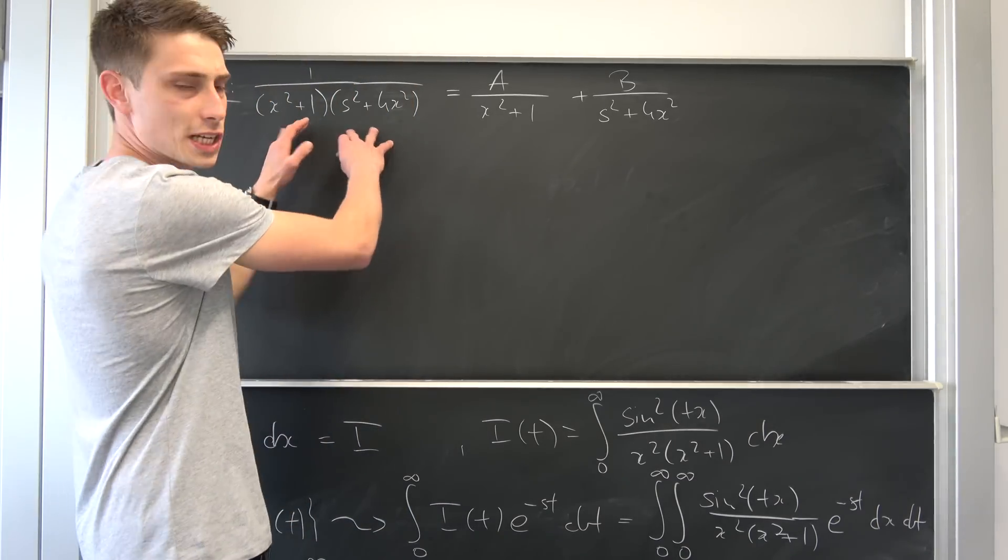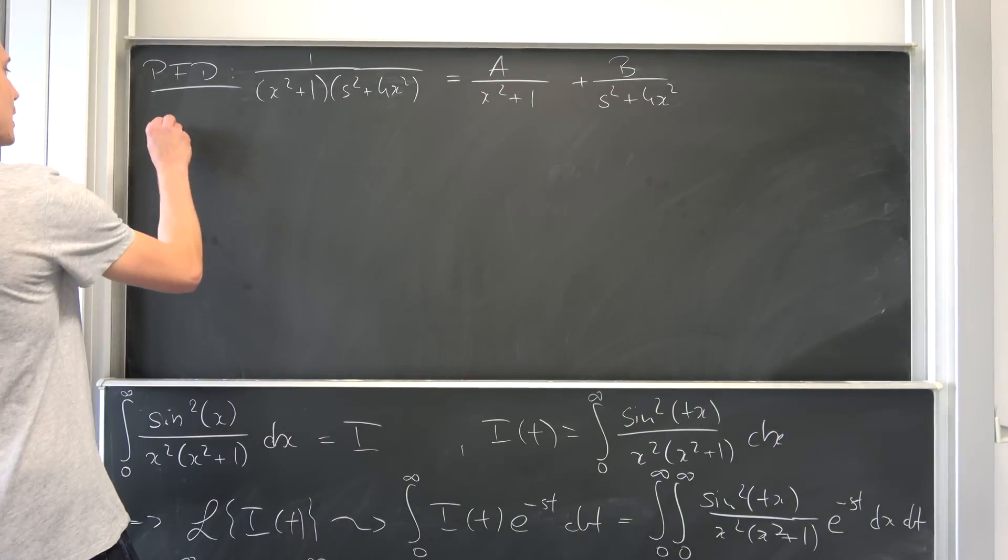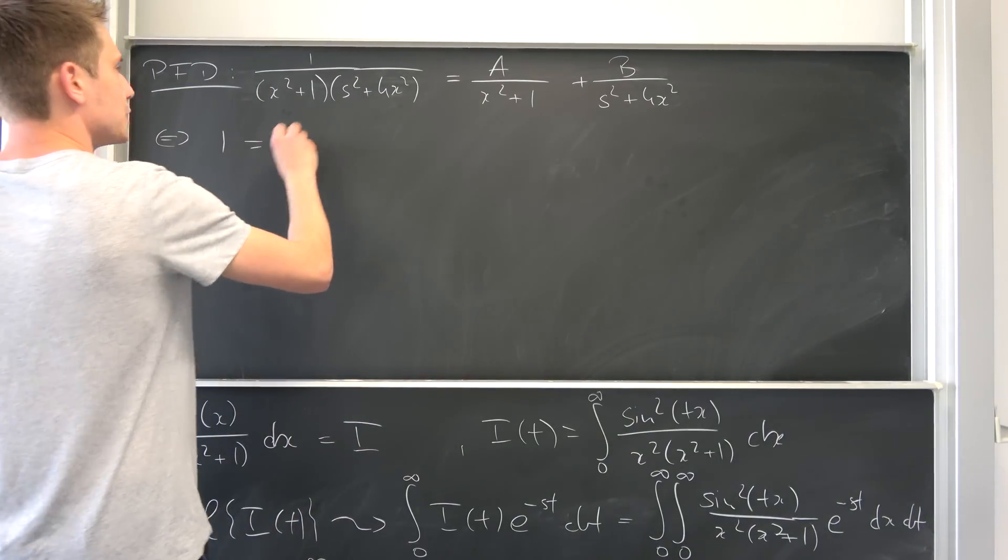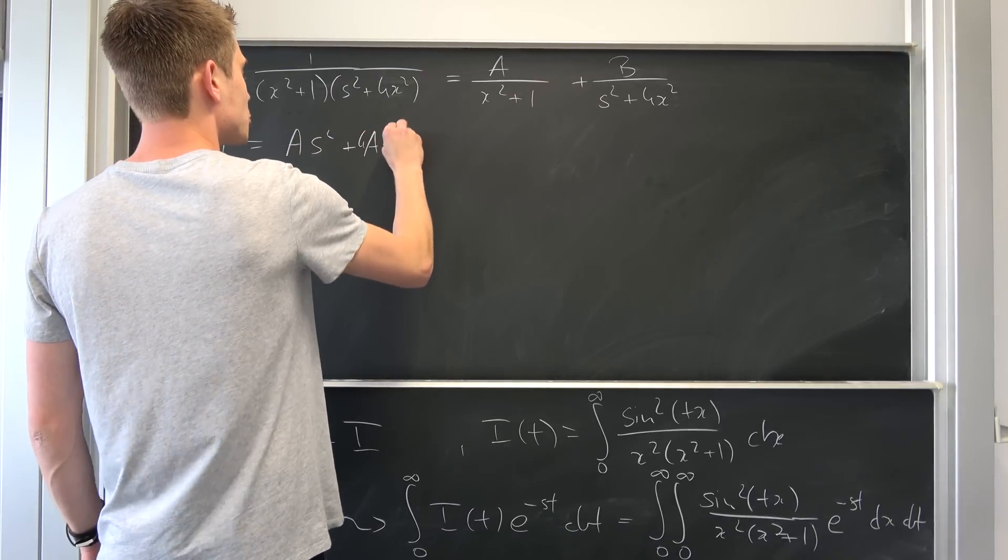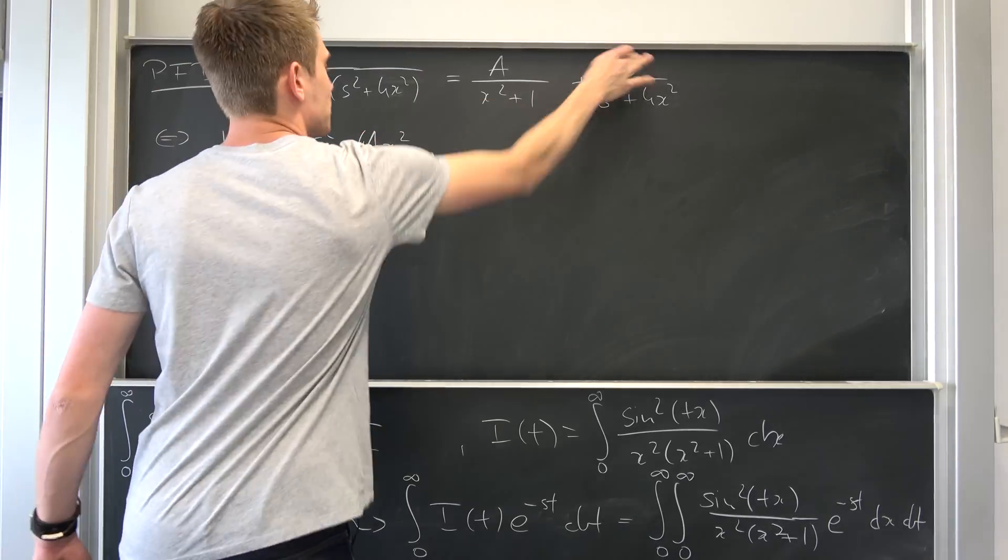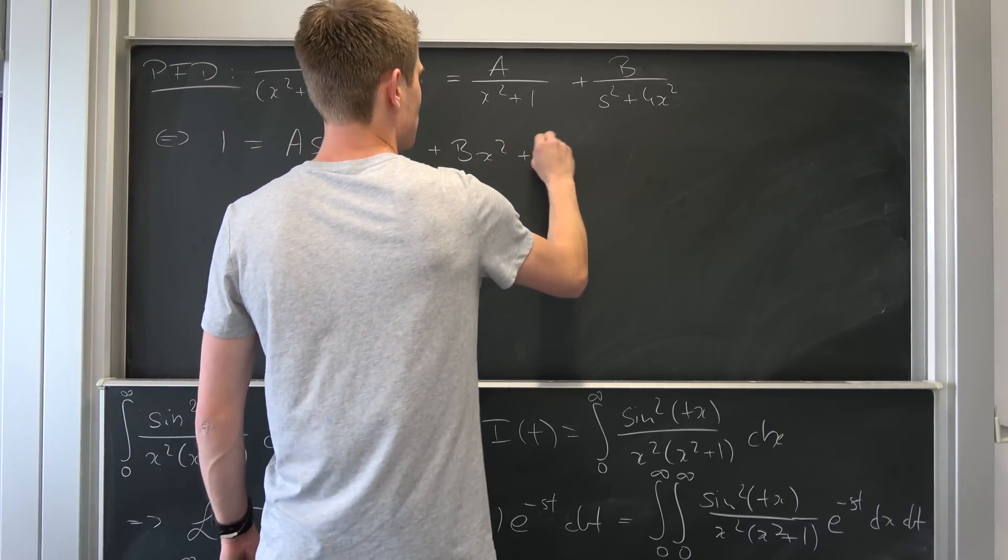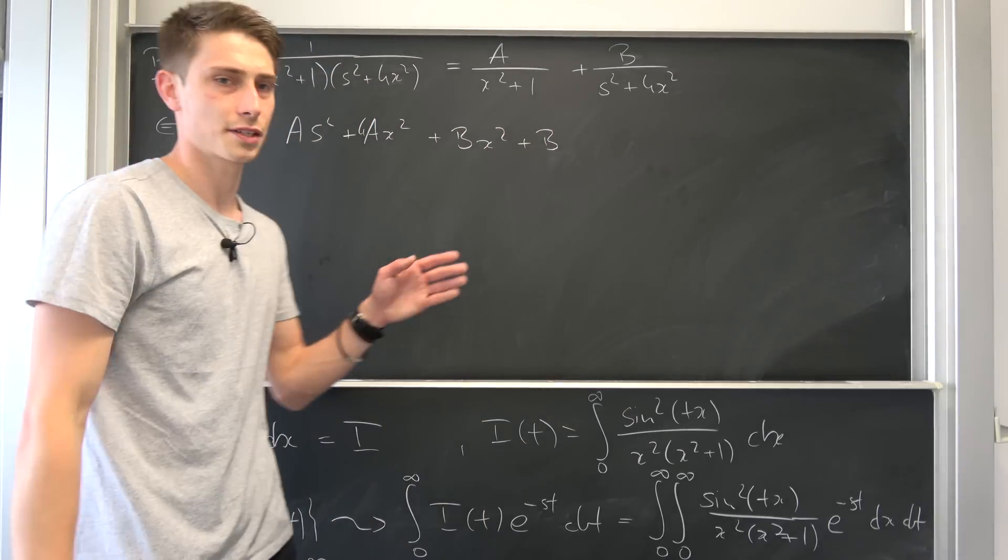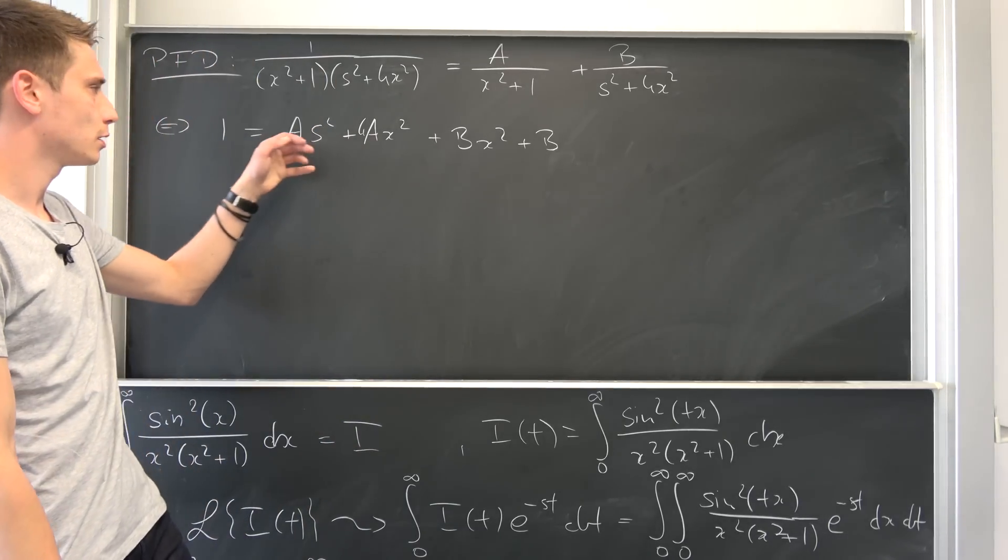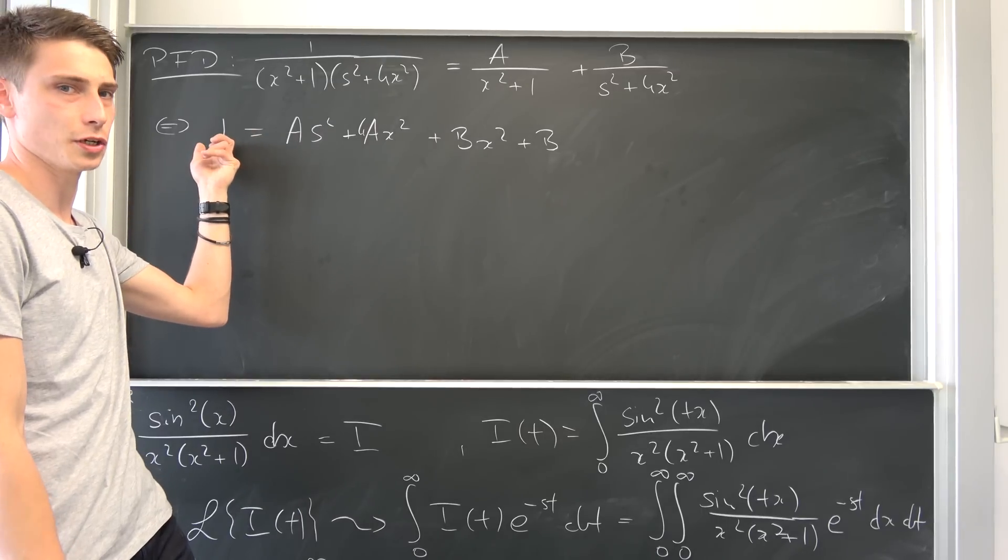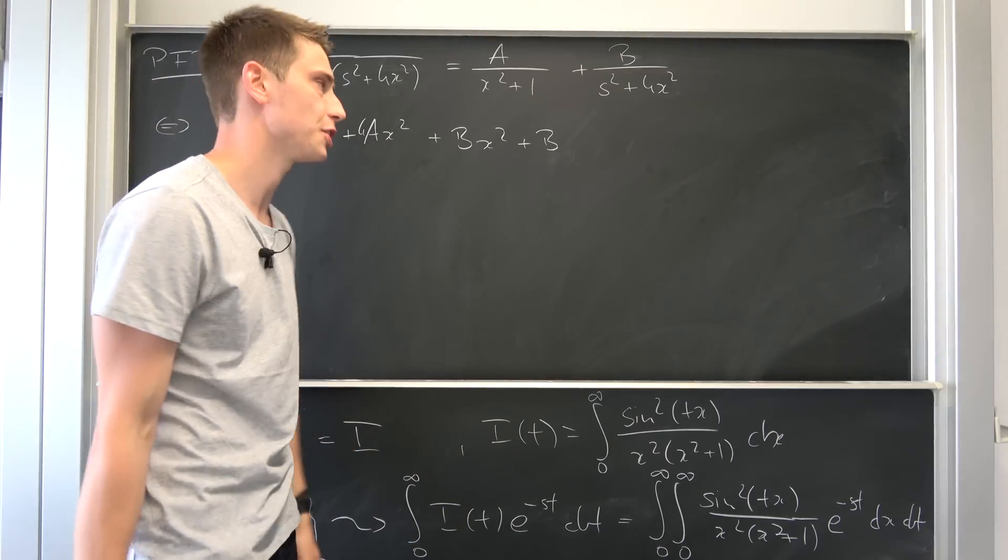Now we can multiply both sides by this big denominator because it's not equal to 0. And what we end up with is just that 1 equals, and now we have a s squared plus 4 a a x squared and also we have this time stat that makes plus b x squared plus b. This polynomial on this side has a degree of 2, but this polynomial has a degree of 0, so we want to make this also a degree of 0. How can we achieve that?